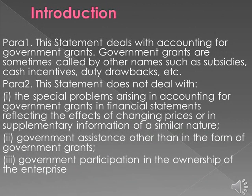Introduction — Para 1: This statement deals with accounting for government grants. Government grants are sometimes called by other names such as subsidies, cash incentives, duty drawbacks, etc. Para 2: This statement does not deal with: (1) the special problems arising in accounting for government grants in financial statements reflecting the effects of changing prices or in supplementary information of a similar nature; (2) government assistance other than in the form of government grants; (3) government participation in the ownership of the enterprise.